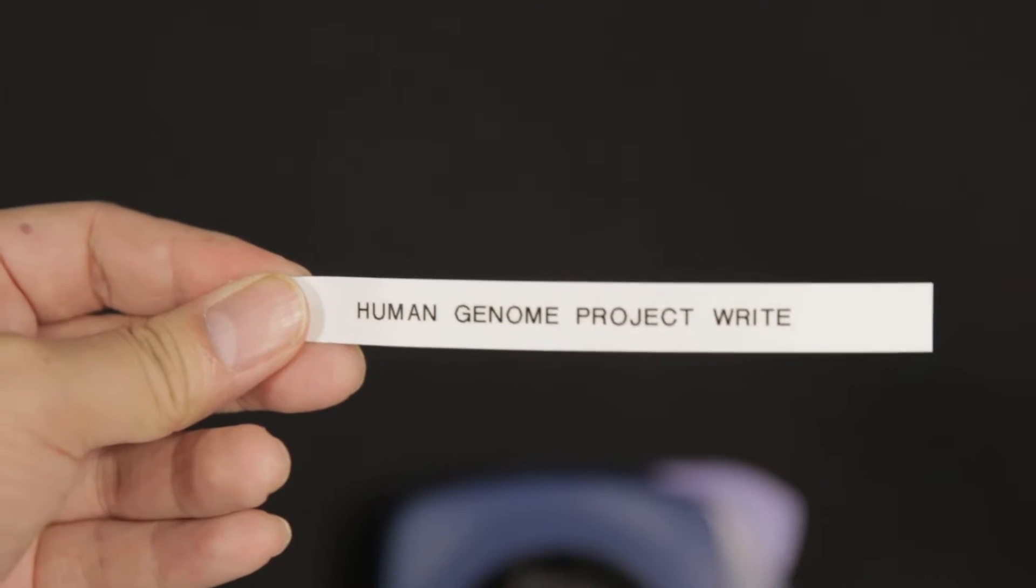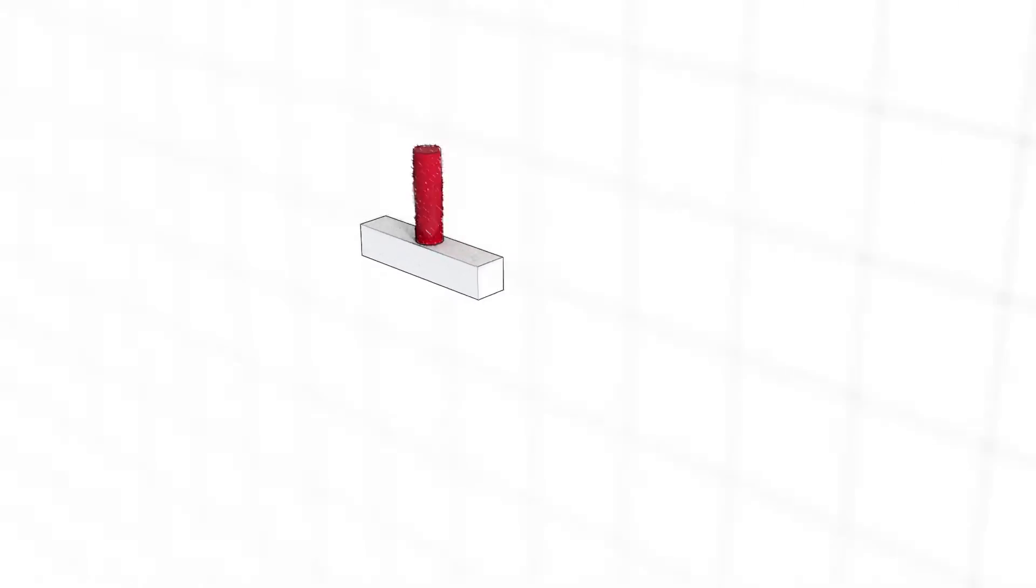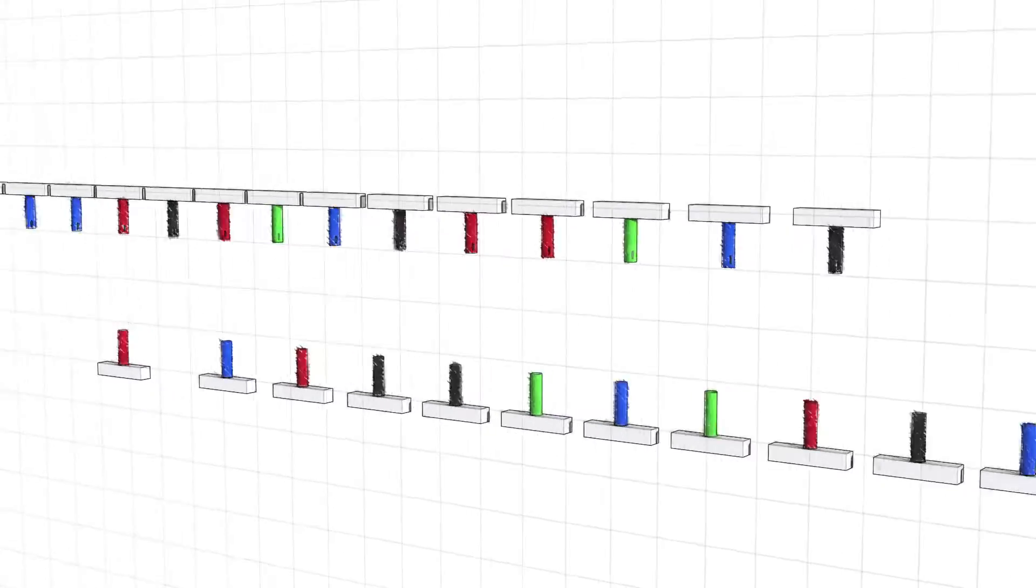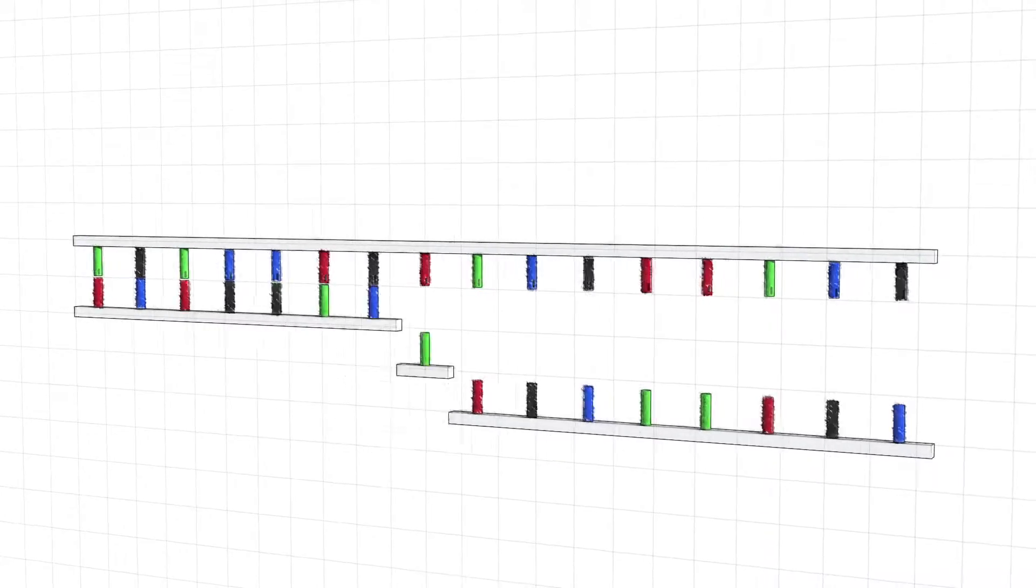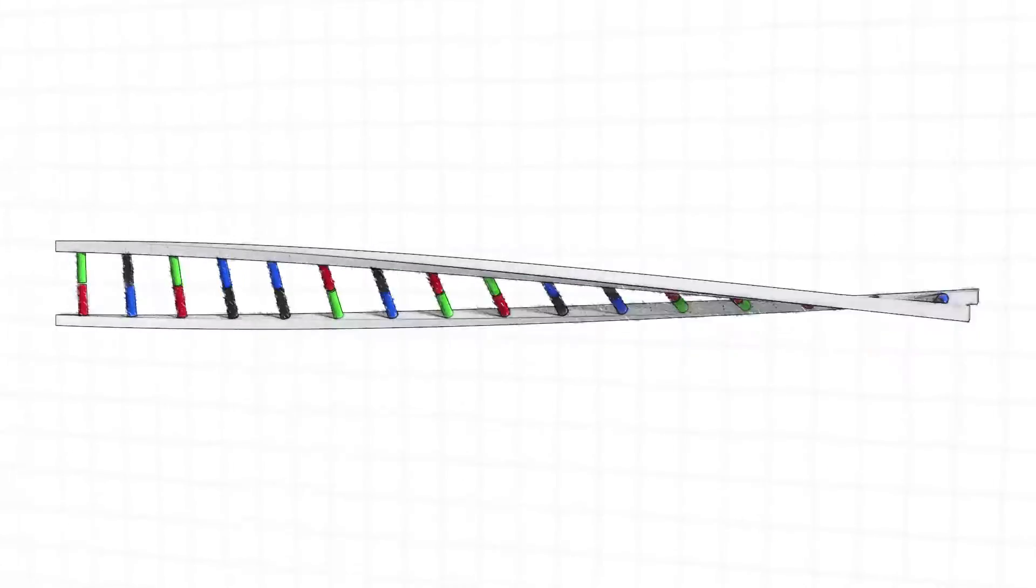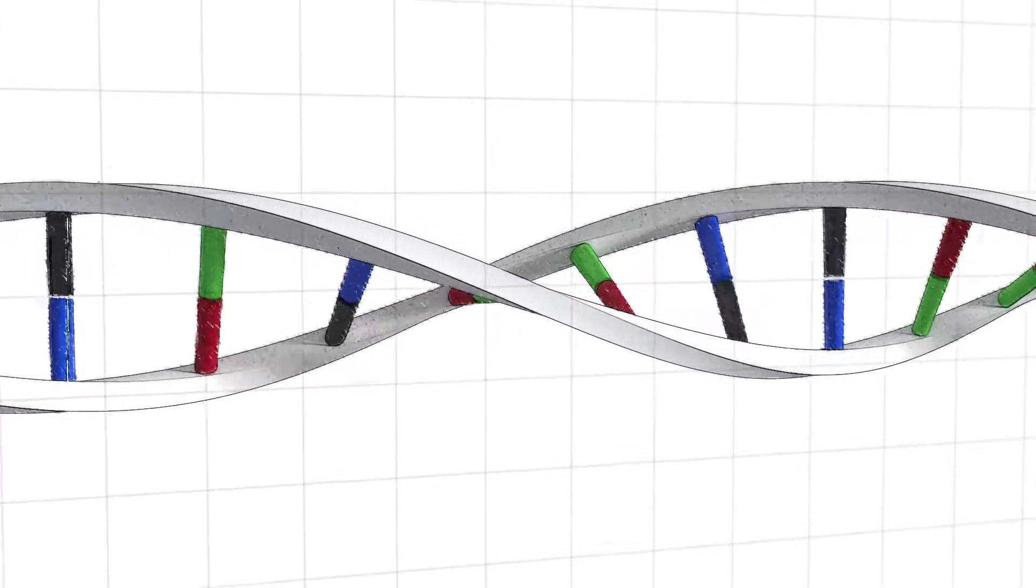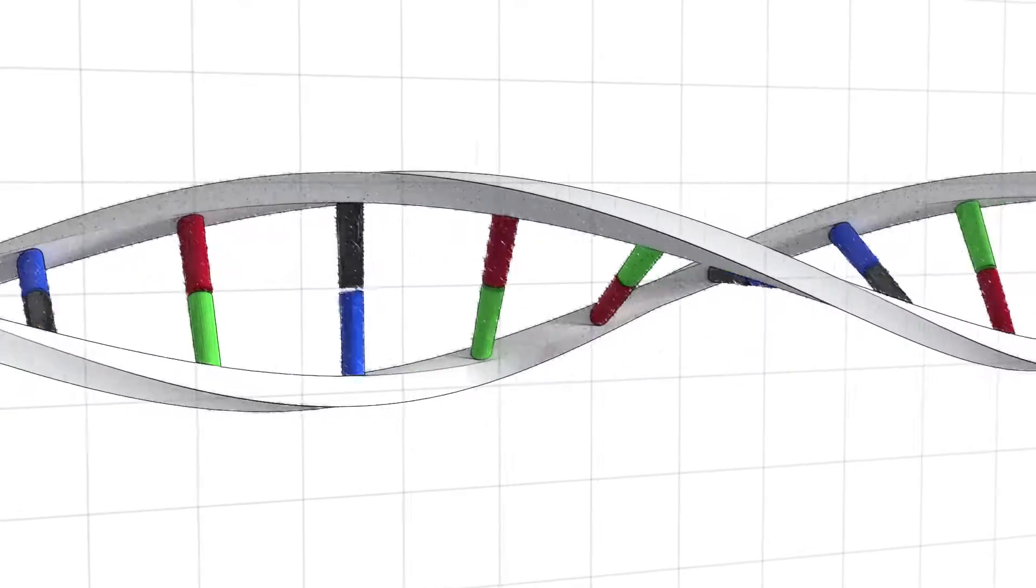HGP-WRITE stands for the Human Genome Project-WRITE. And it's this grand challenge and ambitious effort to try to synthesize very large genomes, potentially a human genome in a cell line. The idea is that if we can begin to start synthesizing genomes on that scale, we may be able to start solving some of these pressing challenges in biological engineering.